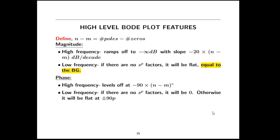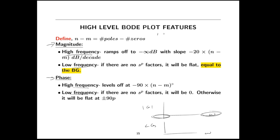The contribution of the Bode gain to the magnitude plot is just a flat horizontal line at the Bode gain value. To the phase plot it contributes nothing. Now, once you've created a Bode plot — whether by hand sketch, MATLAB, or some other tool — it's nice to be able to sanity check it. The checks are broken up in terms of magnitude and phase, and further into high frequency and low frequency behaviors.